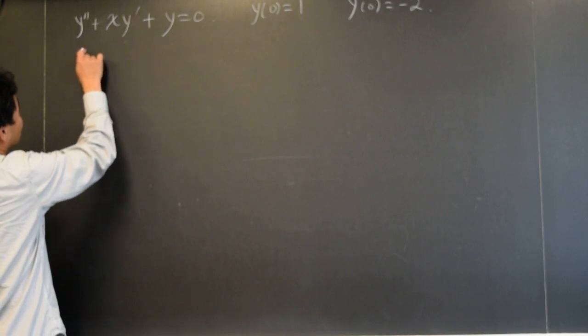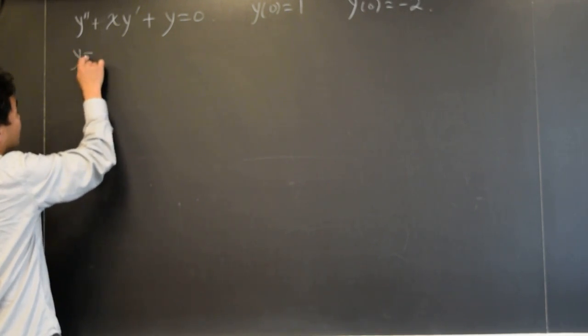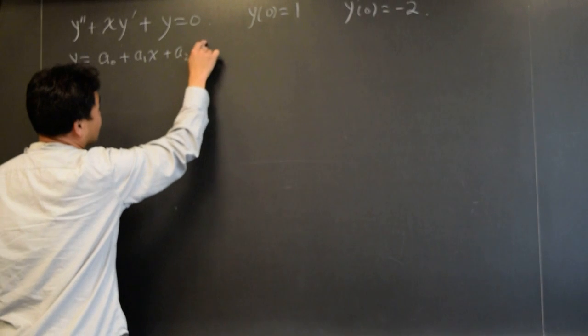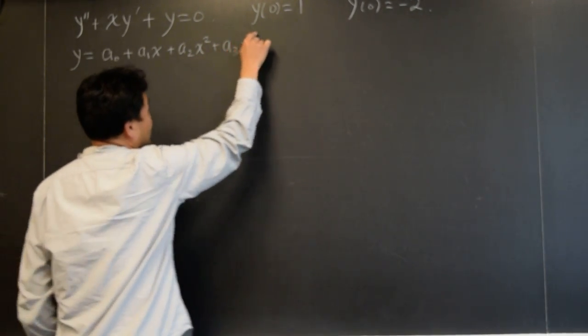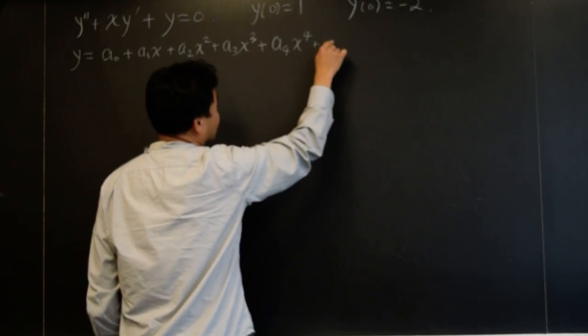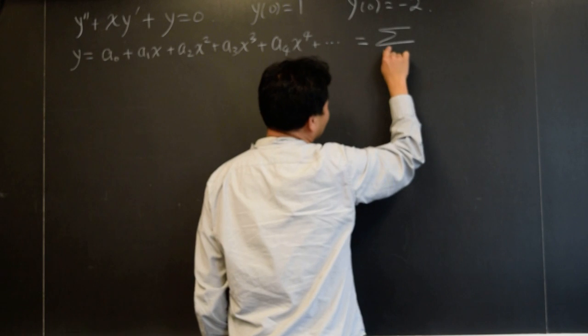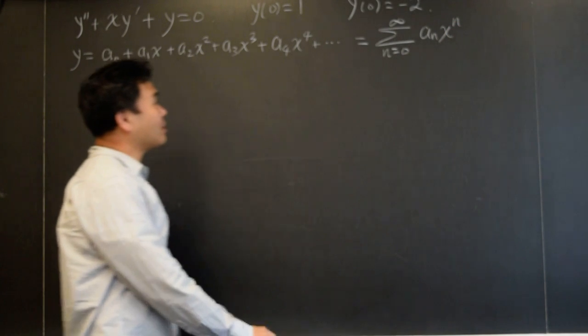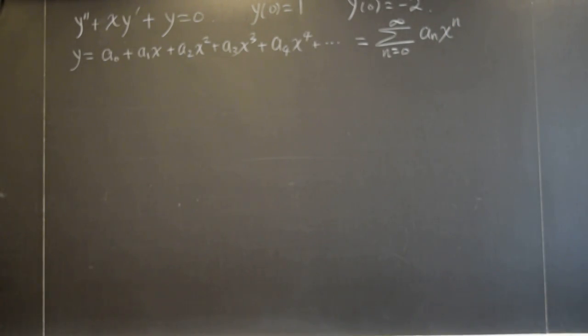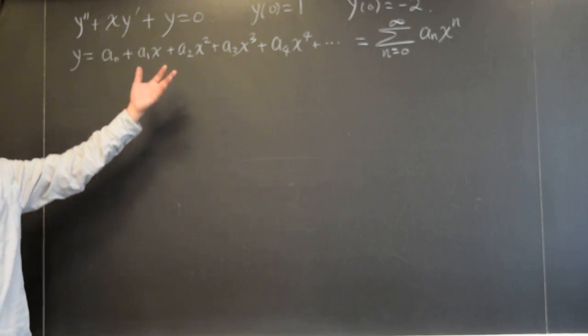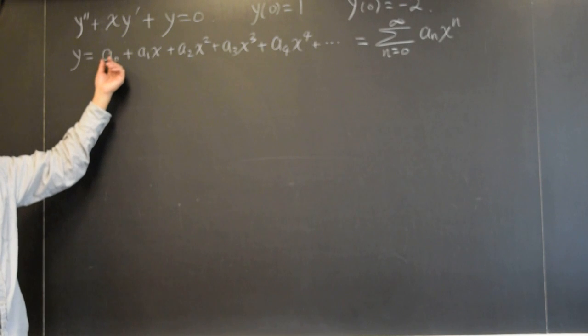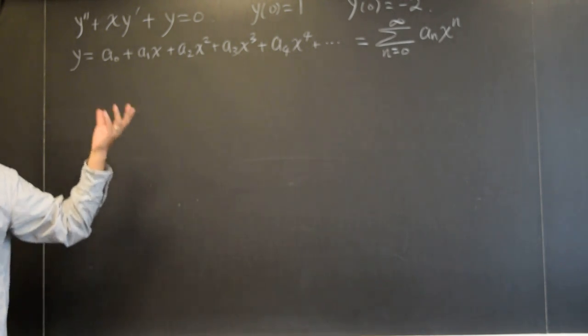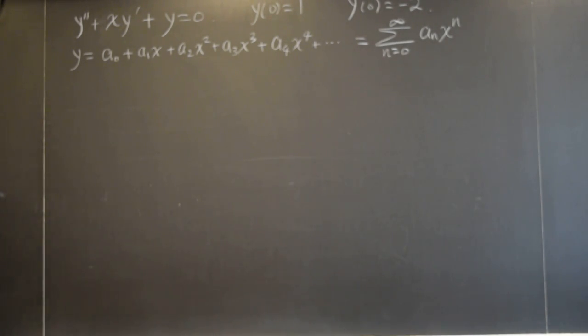So what do you do? You're trying to use y equals a zero plus a one x plus a two x squared plus a three x cubed plus a four x to the fourth, which can be written this way. That's what you're going to plug into this differential equation. And solving this would mean that you're trying to figure out a zero, a one, a two, a three. If you know these values, that means you know the function, right? So that's what we're trying to do.